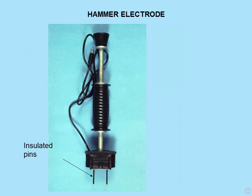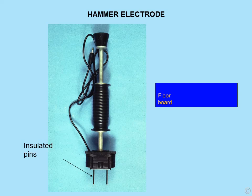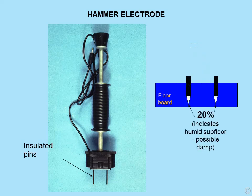We could also use hammer electrodes — an electrode with insulated pins and a handle for ramming into, for example, a floorboard. Looking at a subfloor void, we put the moisture meter probes through the floor. On the top of the board we might get 13% in a hypothetical example; however, by the time we've rammed those probes through the boards, we get a much higher moisture content. This starts to suggest a humid subfloor, possibly even damp, indicating it perhaps needs further investigation.